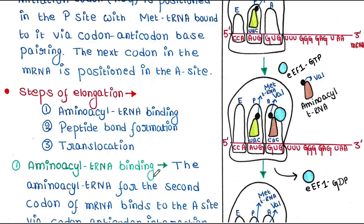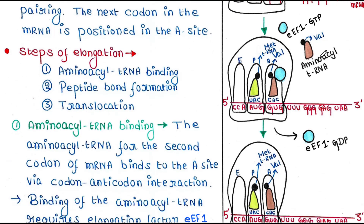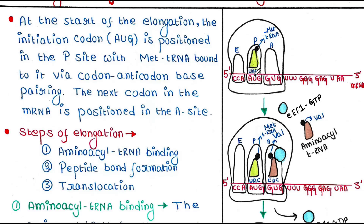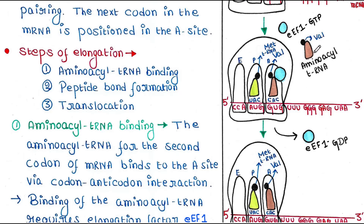The first step is aminoacyl tRNA binding. This is the second tRNA, which is aminoacyl tRNA. The first tRNA was the initiator tRNA placed in the P site. The aminoacyl tRNA for the second codon of mRNA binds to the A site via codon-anticodon interaction. Here the second codon is GUG, so the anticodon in the tRNA should be CAC. This tRNA carries the amino acid valine, since the codon is GUG. So this aminoacyl tRNA along with valine will sit in the A site.